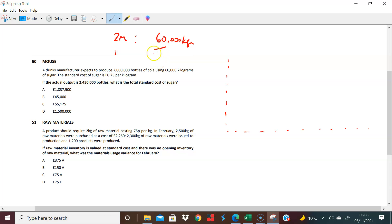So 2 million bottles of cola, 60,000 kilograms of sugarcane. Therefore, one bottle of cola really is 60,000 divided by 2 million to make one bottle. 60,000 divided by 2 million is 3 pence or 0.03 kilograms to make each bottle. Now, the standard cost of sugar is 75 pence per kilogram, so that's 0.75 per kilogram.